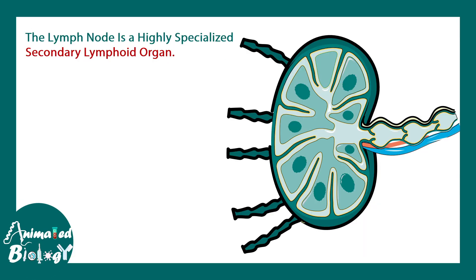Lymph node is a highly specialized secondary lymphoid organ. Secondary lymphoid organs are those organs where immune cells are not born, but they reside there and get activated for their job.